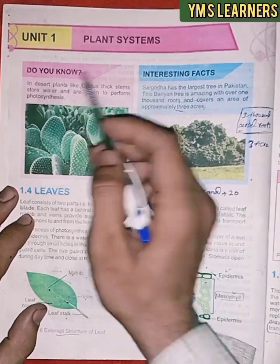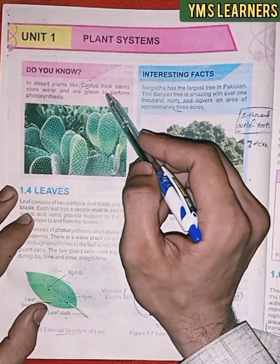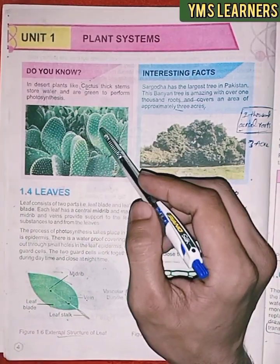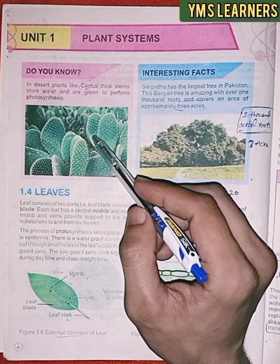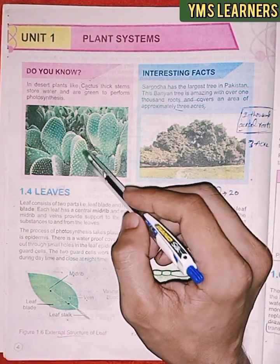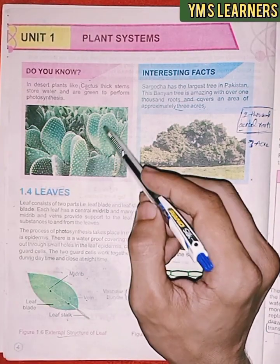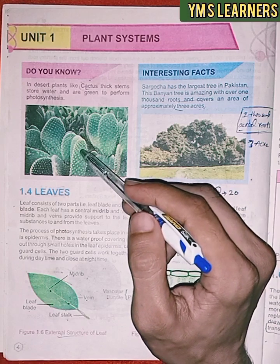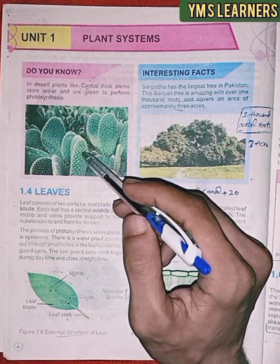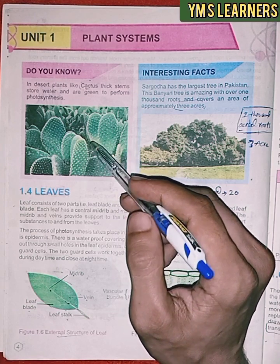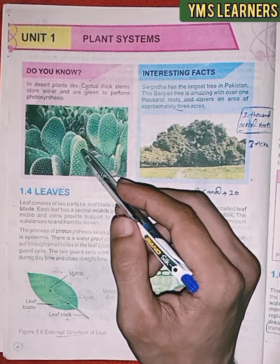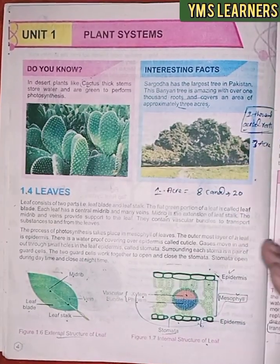Do you know that in desert plants like cactus, thick stems store water and are green to perform photosynthesis? Cactus plants have spines instead of leaves. The spines help save water, and photosynthesis occurs in the green stem. This is interesting information.